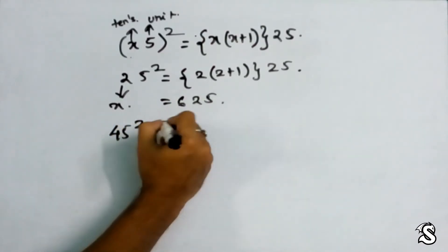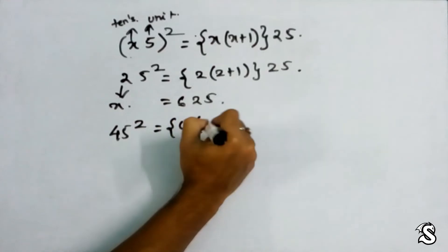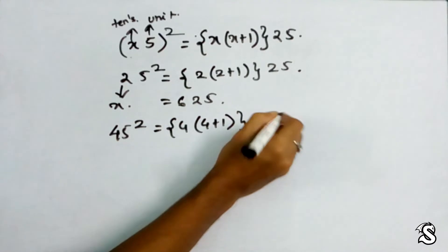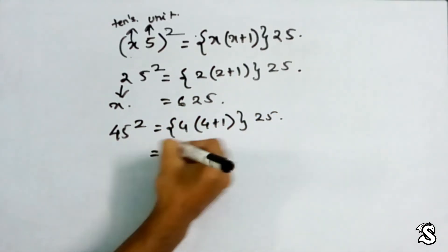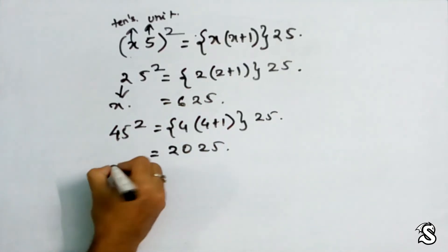Let's take another example like 45 square. We are going to do 4 into 4 plus 1, which is nothing but 5, and the last two digits are always 25. So it will be 2025.